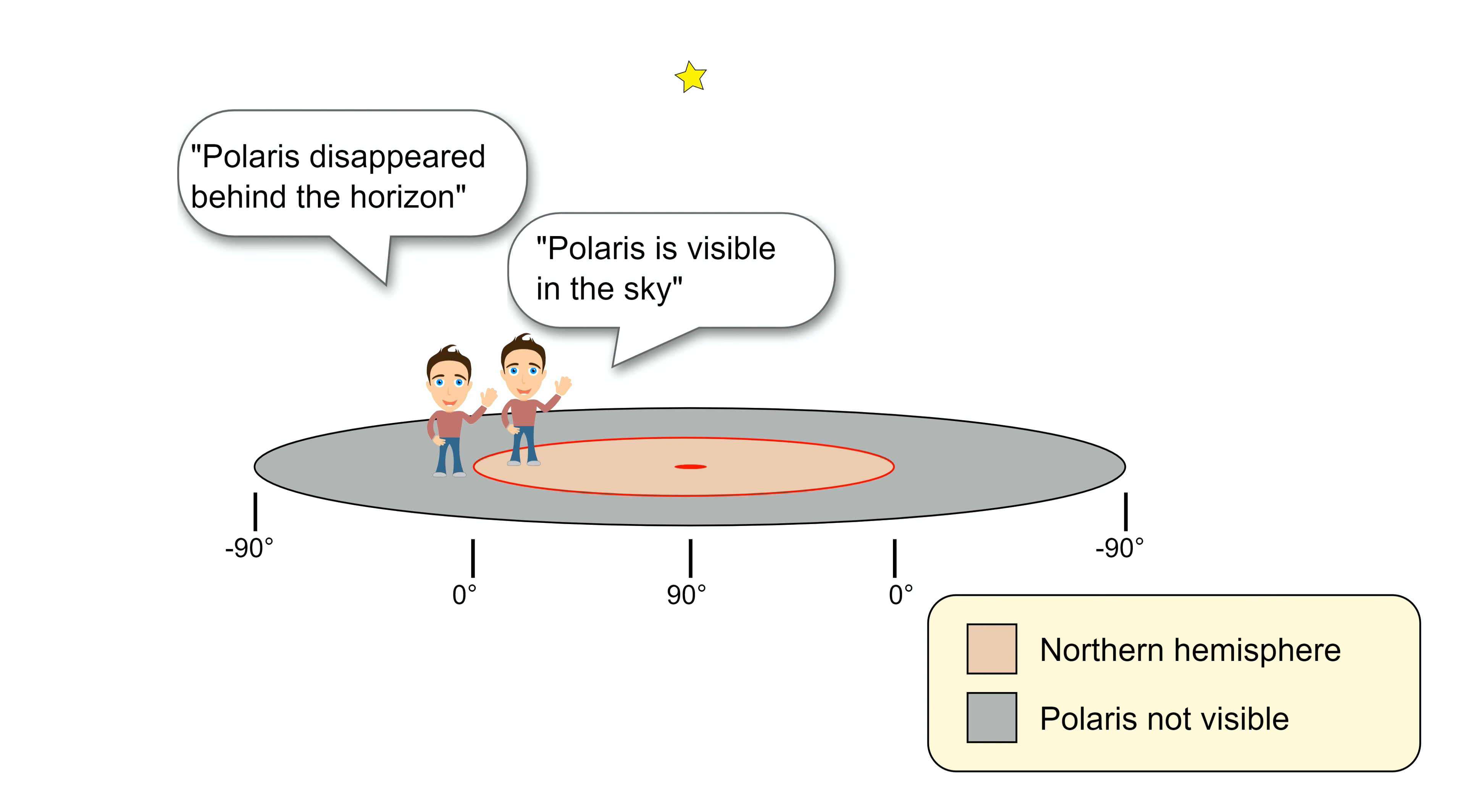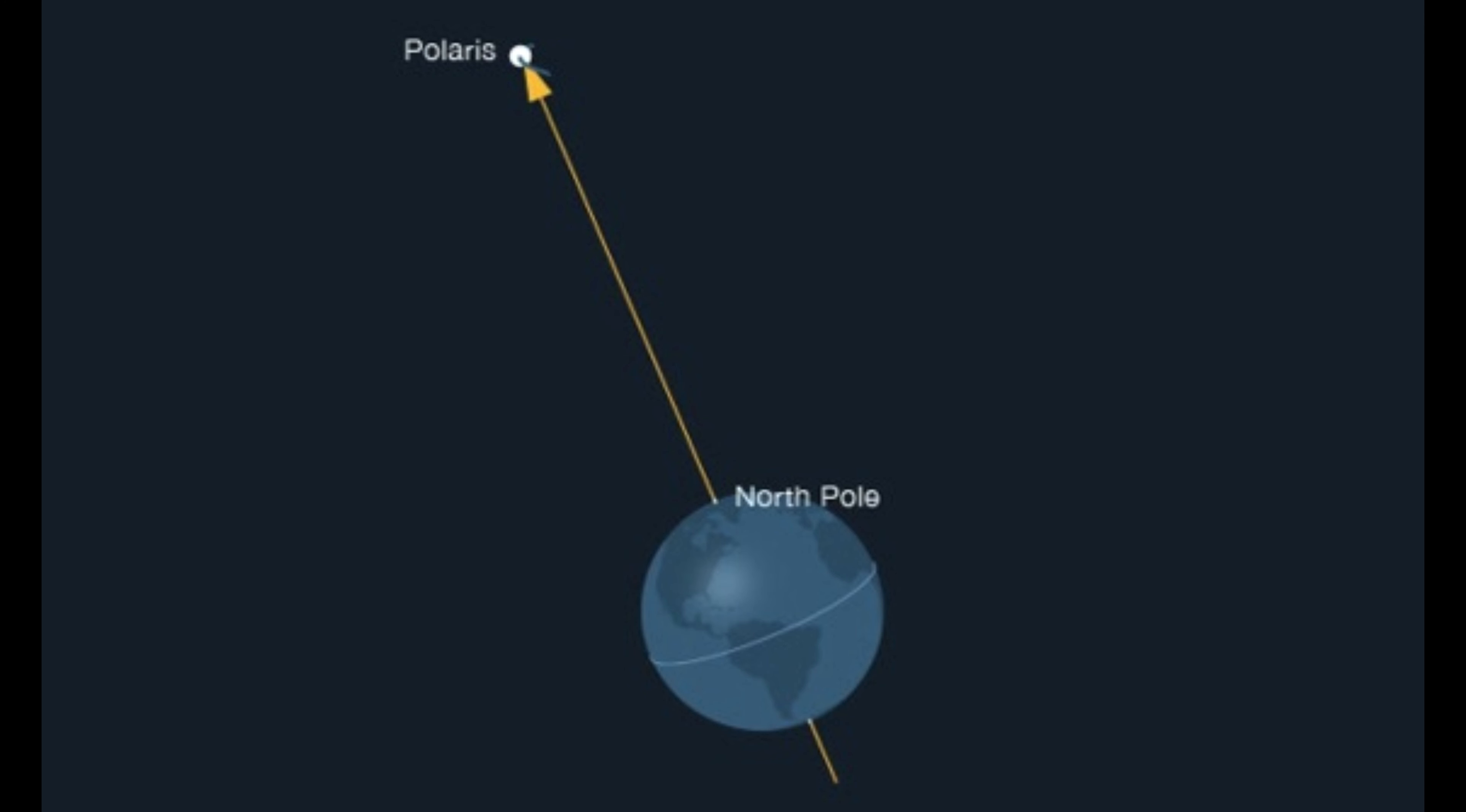And his smartphone app shows it's below the ground, while the person that remained reports that Polaris is still visible. How can Polaris at the same time be below the flat earth disk, and at the same time above it? On a spherical earth, this is perfectly explained.